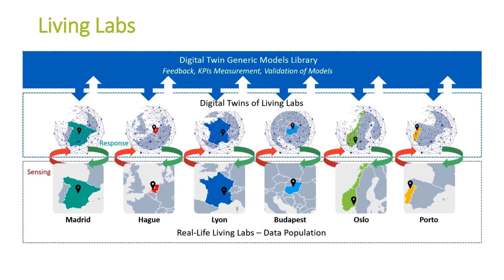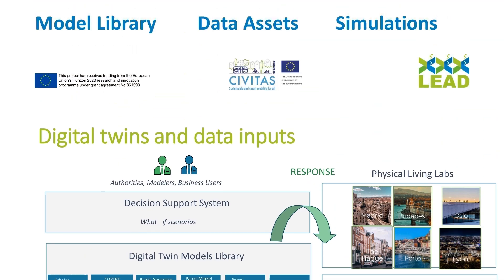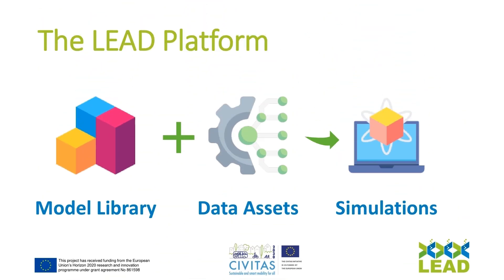Digital twins can anticipate failures and suggest optimal schedules for operation. A digital twin can evolve with the city if relevant data from a variety of sources are made available. In this case, digital twins and their physical counterparts can work together optimally, since changes within the real world can be embedded in the virtual models through a dynamic sensing-response loop.